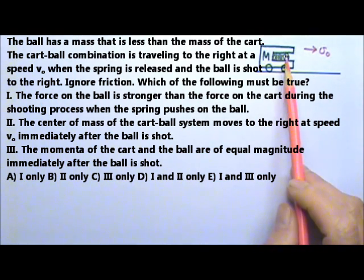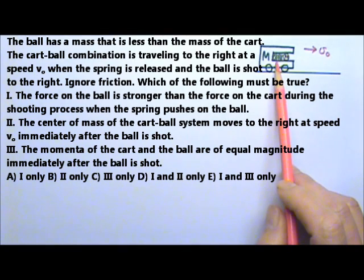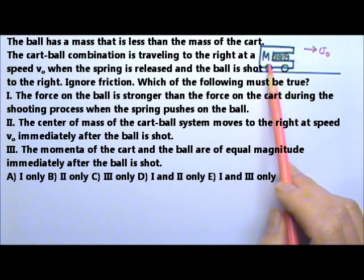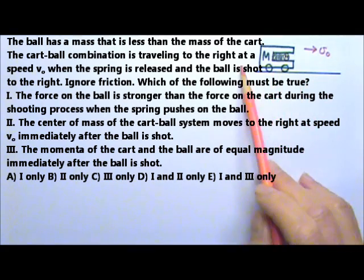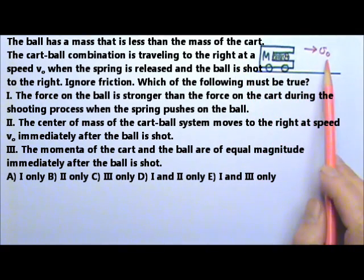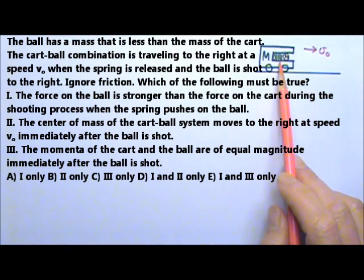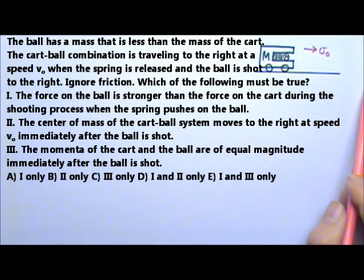A ball is loaded into a spring gun cart with the spring compressed. The ball has a mass that is less than the mass of the spring gun cart. The cart-ball combination is traveling to the right at a speed v₀ when the spring gets released and the ball is shot to the right. Ignore friction. Which of the following must be true?